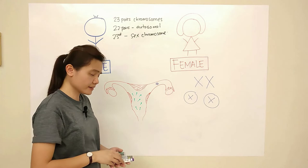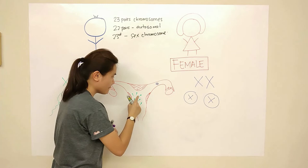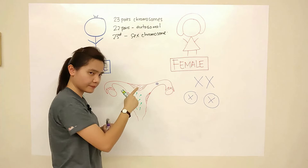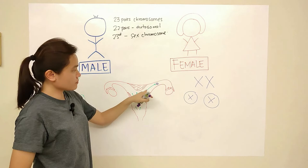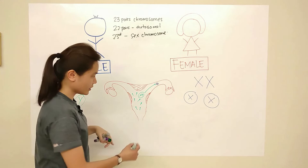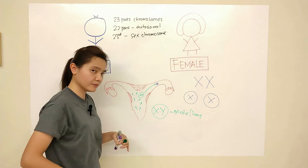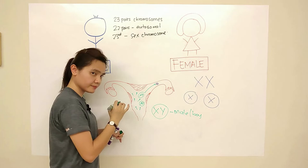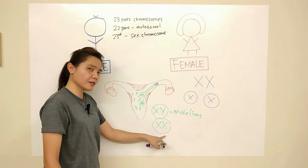So the gender of the baby will be determined by which sperm fertilizes the egg. If the Y sperm fertilizes this egg, it will be XY — so the baby will be male, a baby boy. If the X sperm fertilizes this egg, it will be XX — so the baby will be a girl.